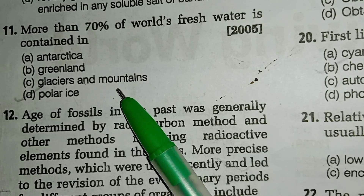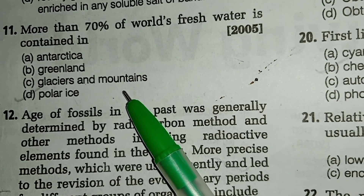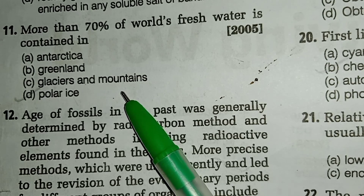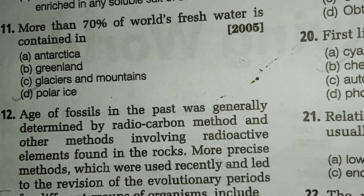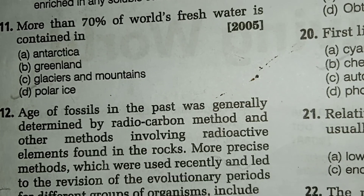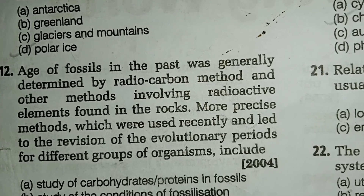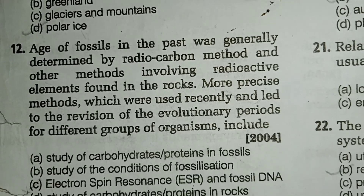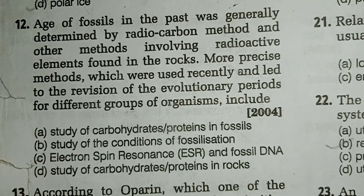Most of this fresh water — about 1.97% — occurs as frozen ice caps and glaciers, and 0.5% of fresh water occurs as groundwater. Next, question number 12: the age of fossils in the past was generally determined by the radiocarbon method and other methods involving radioactive elements found in rocks.